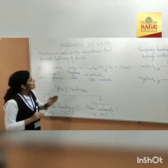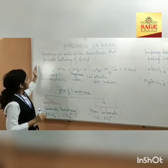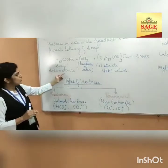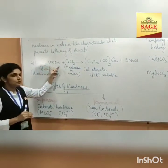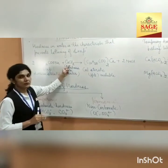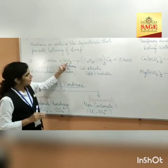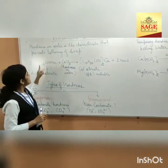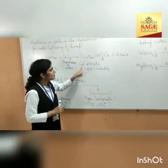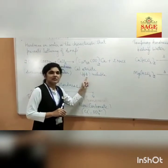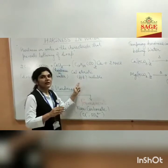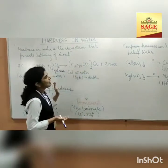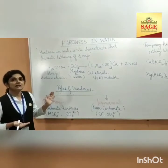We can explain why soap does not give lather with the help of a chemical equation. Soap is the sodium salt of fatty acid. We have taken sodium stearate, which is C17H35COONa. When this soap is treated with water containing hardness — for example, calcium chloride (CaCl₂) dissolved in water — the soap does not form lather, but instead forms an insoluble white precipitate called scum, and that is not lather.